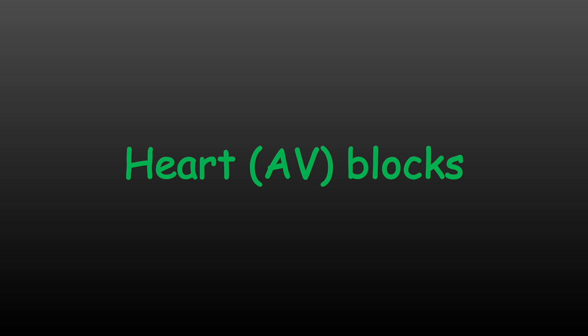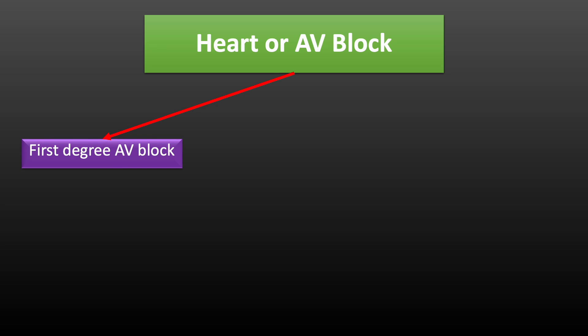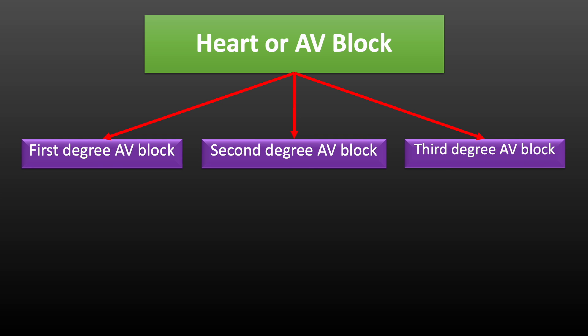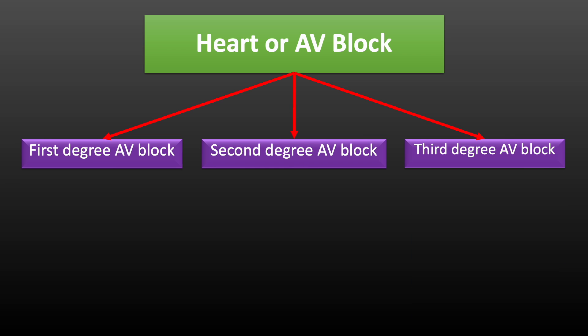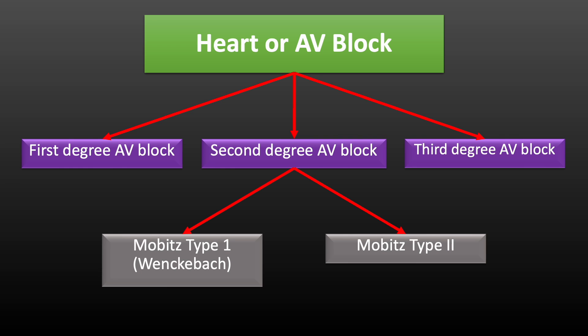Now we shall learn about heart block, also called as atrioventricular or AV block. AV block develops when there is some conduction disturbance between atrium and ventricle. AV block can be of 3 types: 1st degree AV block, 2nd degree AV block, and 3rd degree AV block. 3rd degree AV block is also called as complete heart block. 2nd degree heart block is further subdivided into Mobitz type 1 and type 2 heart blocks. Mobitz type 1 is also known as Wenckebach phenomenon.